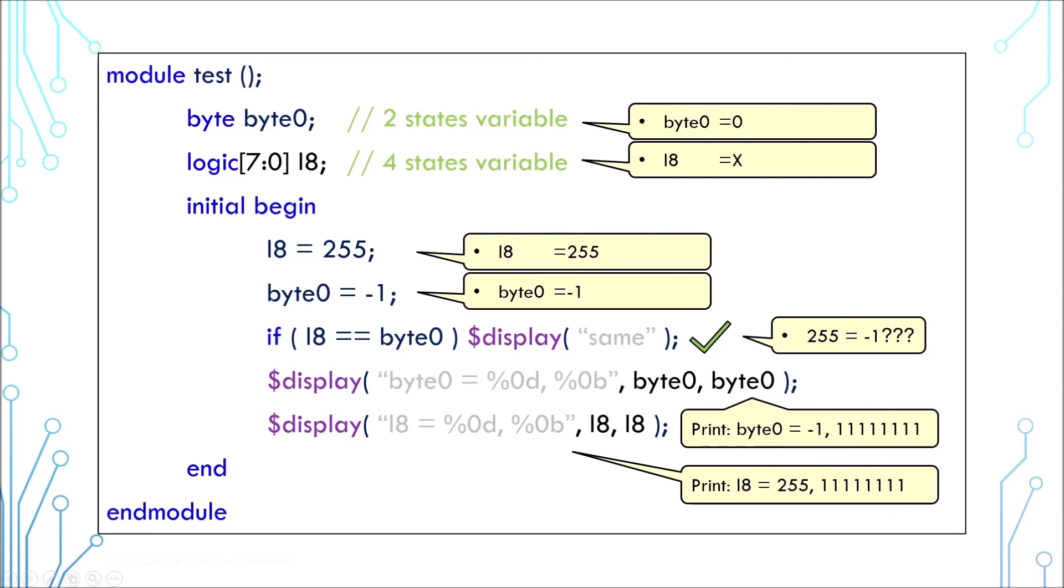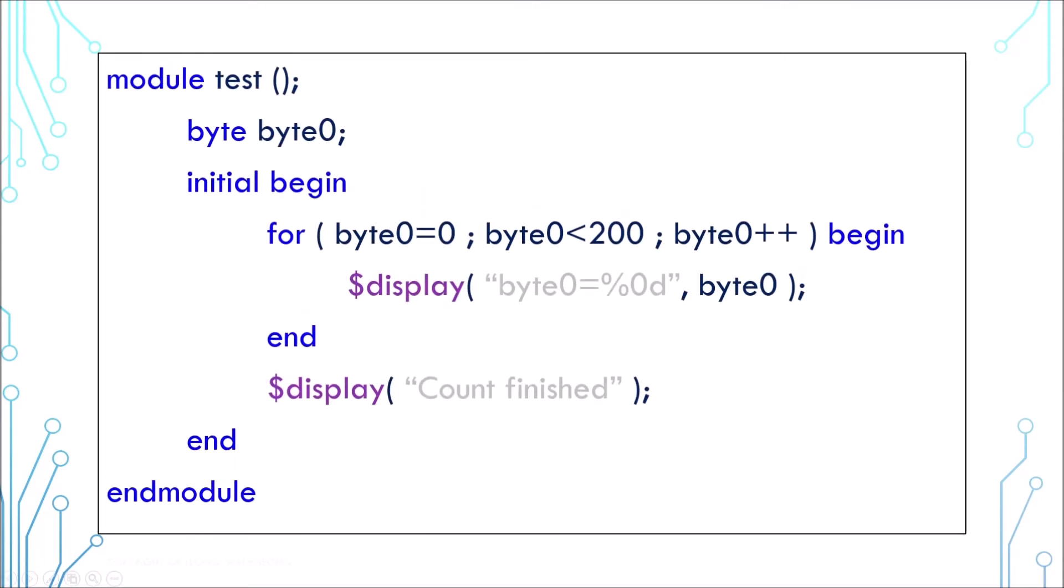One more example: this is a counter that counts from 0 to 199 and prints out the number. Something is wrong about this code. Can you figure it out? Stop the video if you wish.